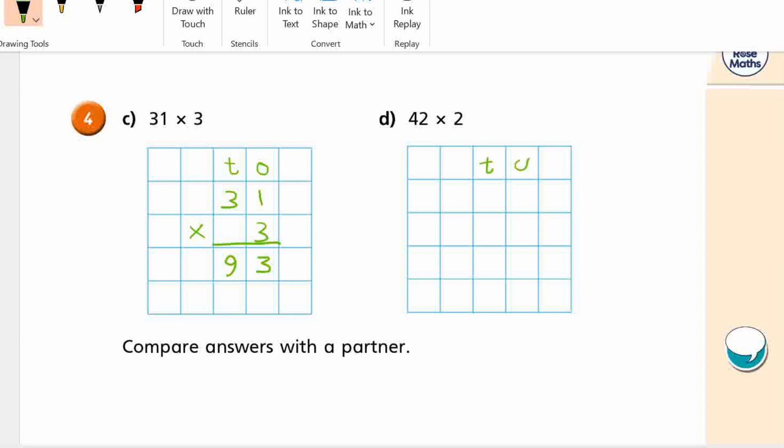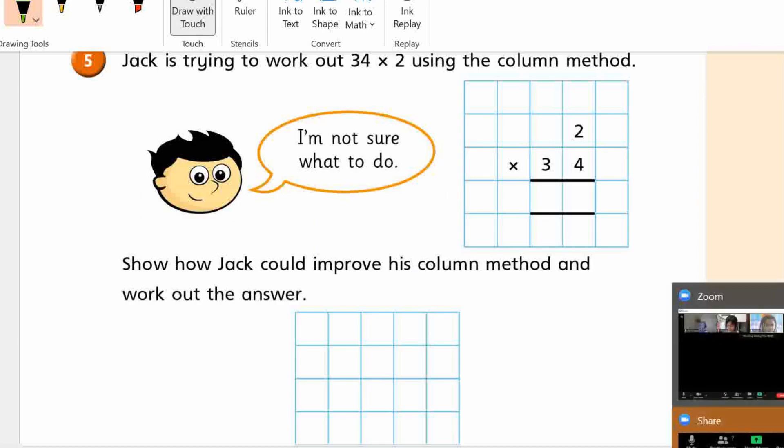So I need to do tens and ones here. And I need to put 4 in the tens, because there's 40, and 2 in the ones. There's 2 ones. Multiplying by 2. And again, do my line. What's 2 times 2? 4. What's 2 times 4? 8. Okay.